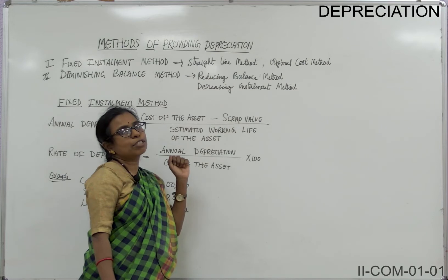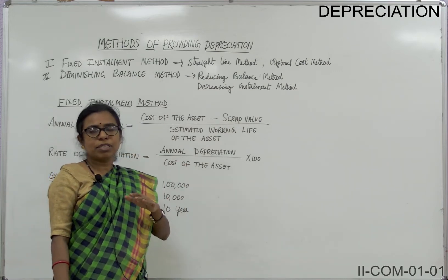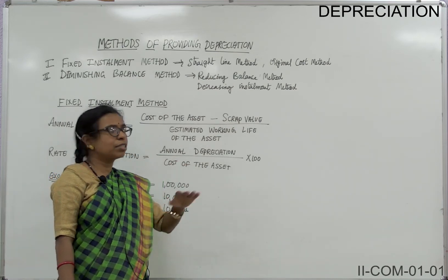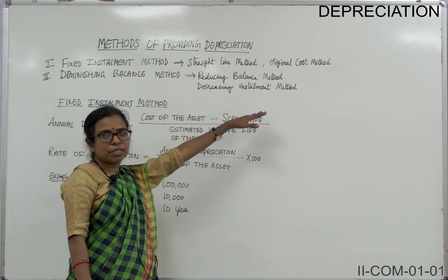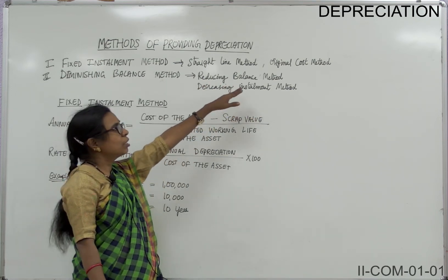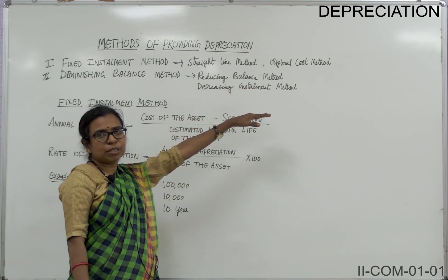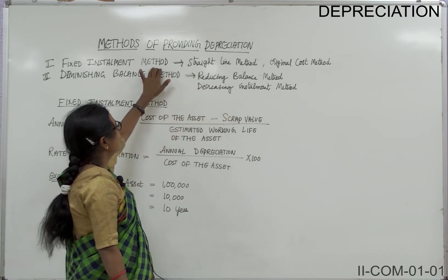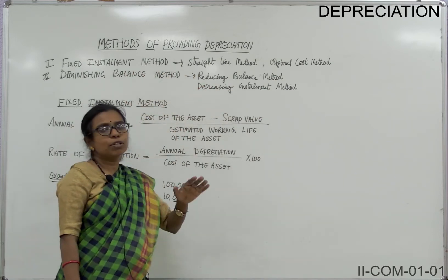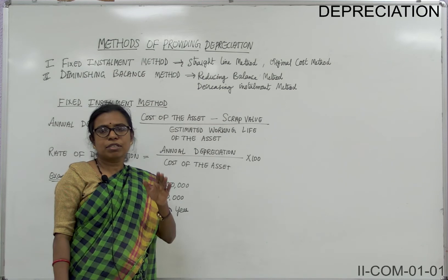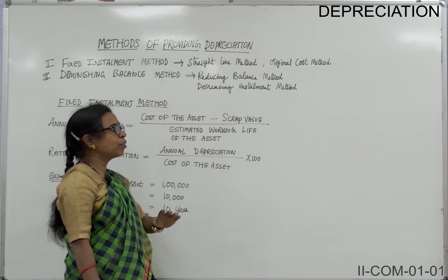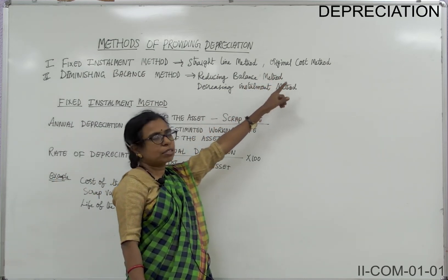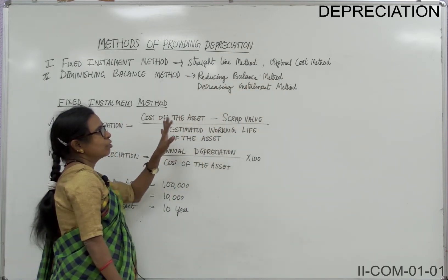It is also called the original cost method because the amount of depreciation is to be calculated on the cost of the asset. So it is called the original cost method. The main point here is that the amount of depreciation is fixed and is to be calculated on the original cost.